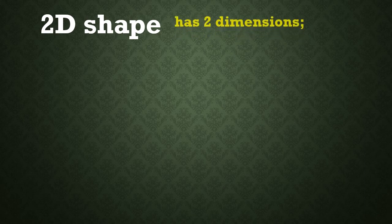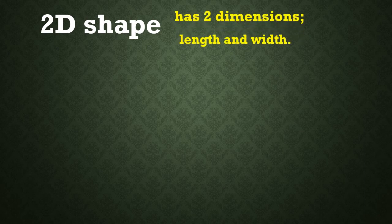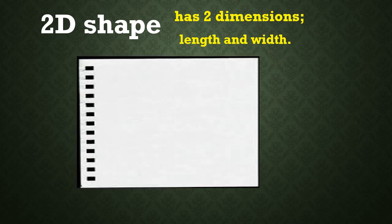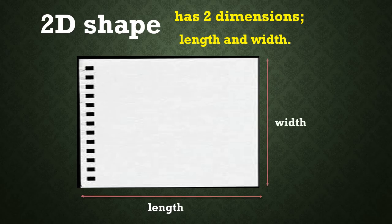What is a 2D shape? A 2D shape has two dimensions: the length and the width. For example, the two dimensions of this 2D shape are length and width.